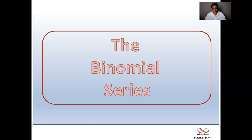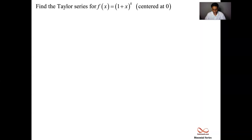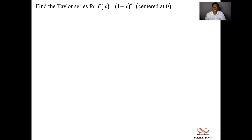The binomial series is built off of having a binomial — two terms. We have 1 plus x as a standard form, and we raise it to a power, allowing that power to be any real number. Most cases it's a half or a third. We want to find the Taylor series for this function. When it's centered at 0, it has another name — it's called the Maclaurin series.